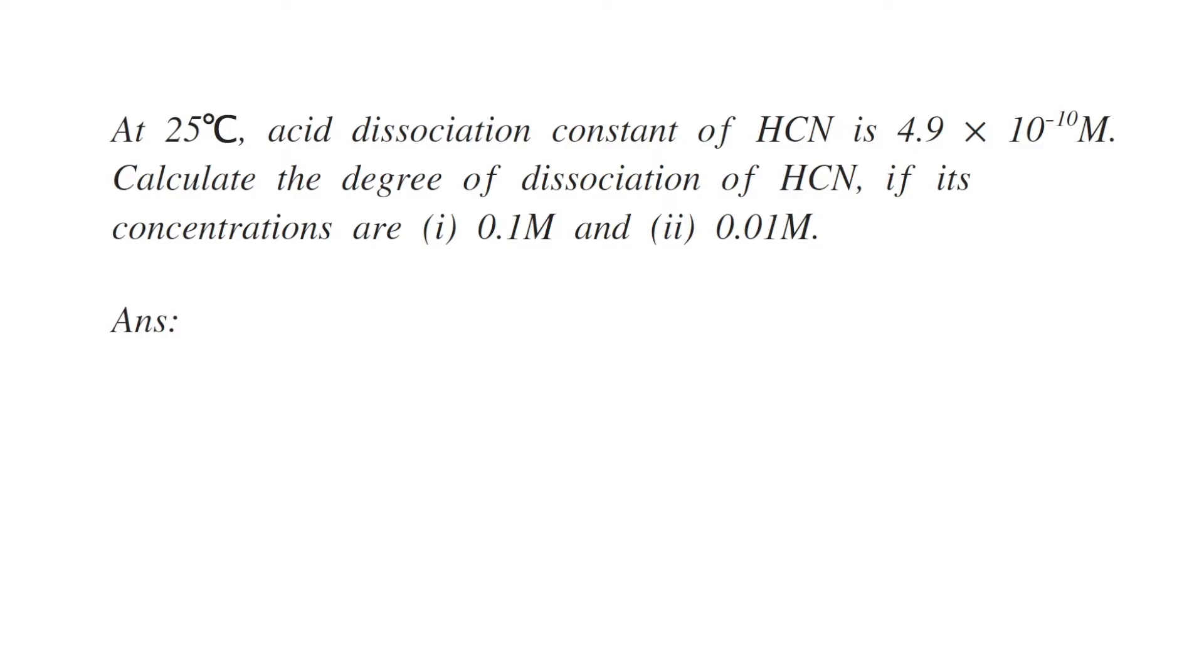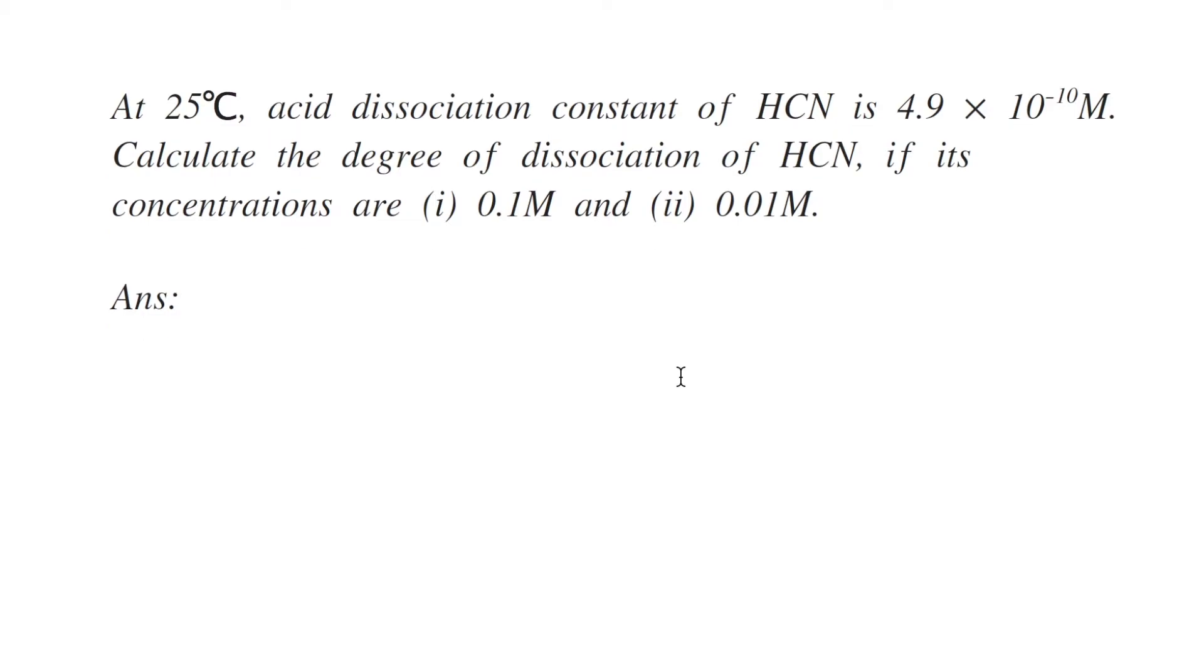At 25 degrees Celsius, acid dissociation constant of hydrogen cyanide is 4.9 into 10 to the power minus 10 moles. Calculate the degree of dissociation of hydrogen cyanide if its concentrations are 0.1 mole and 0.01 moles.